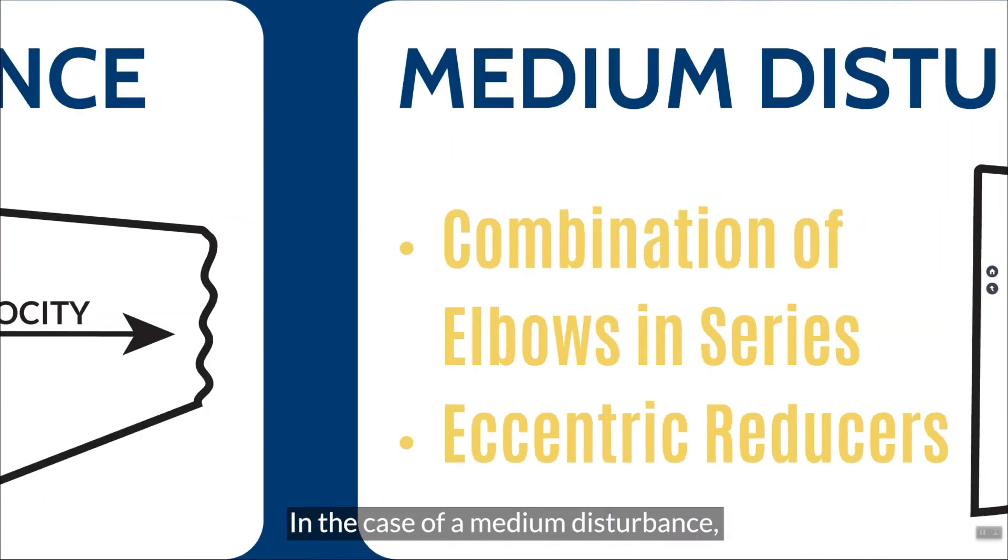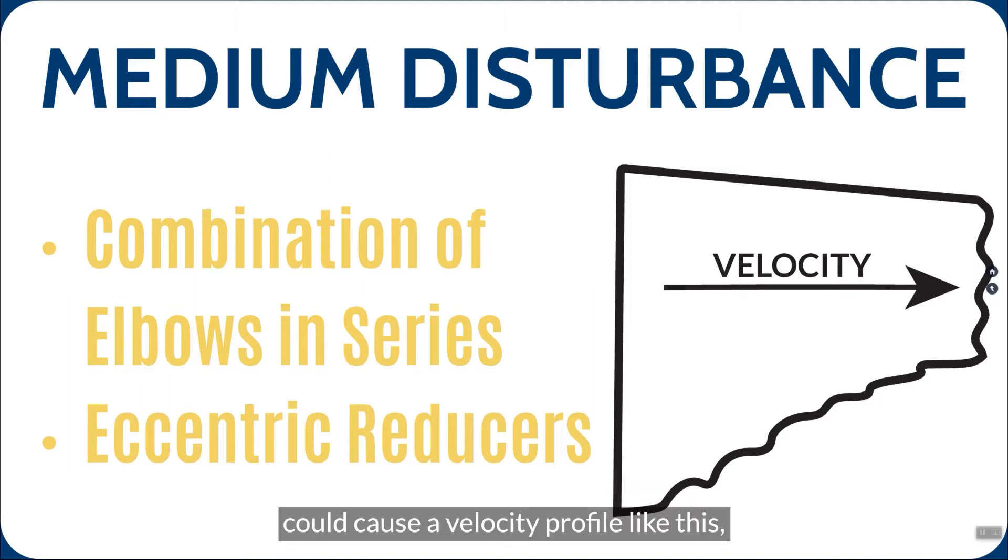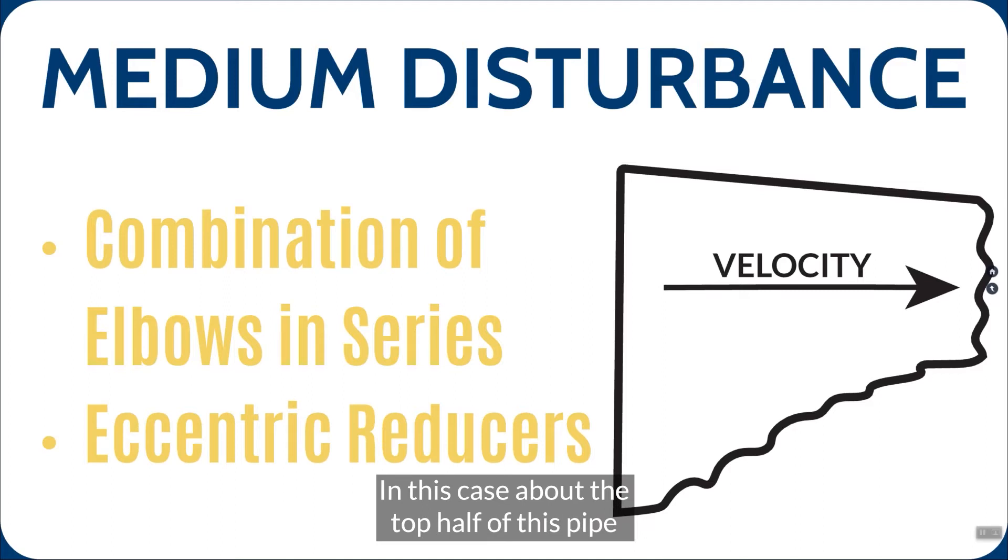In the case of a medium disturbance, things like a combination of elbows and series or maybe an eccentric reducer right in front of the element could cause a velocity profile like this. It may be a medium disturbance. In this case, about the top half of this pipe is moving steady. That's about the same velocity, but then you get this slow degradation of velocity as it moves towards the bottom of the pipe.